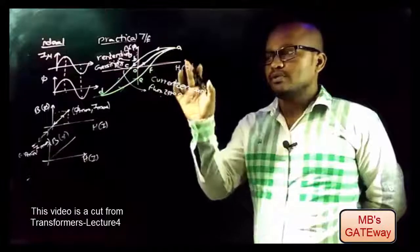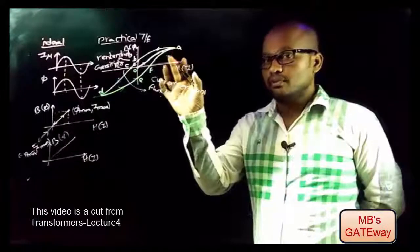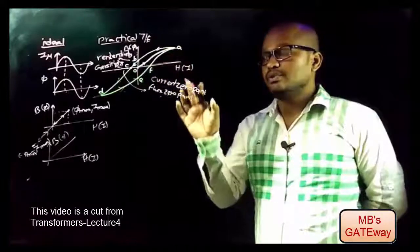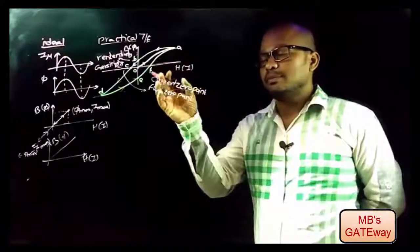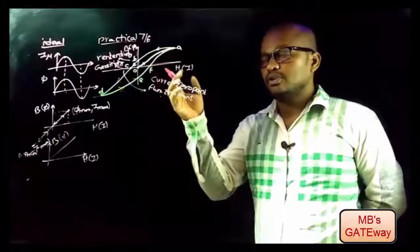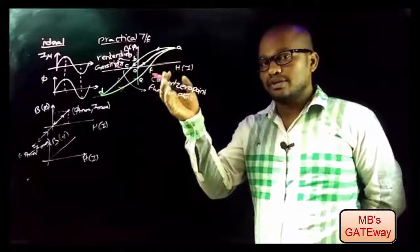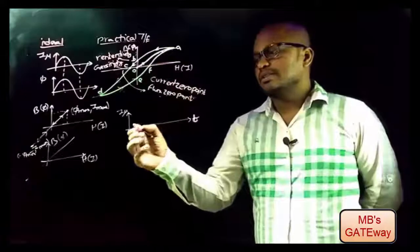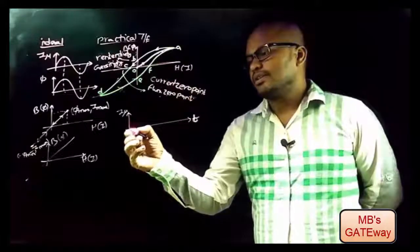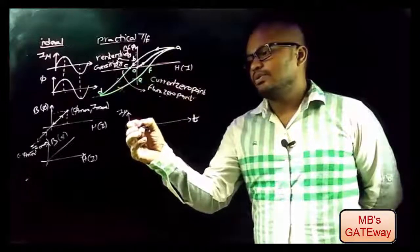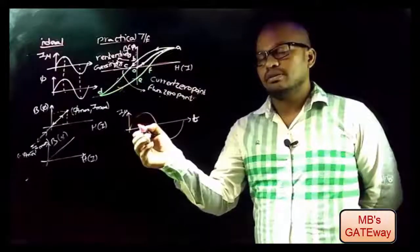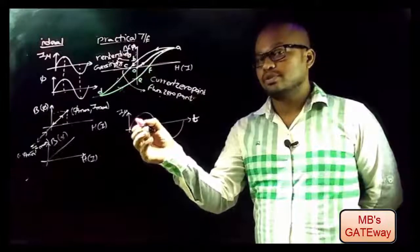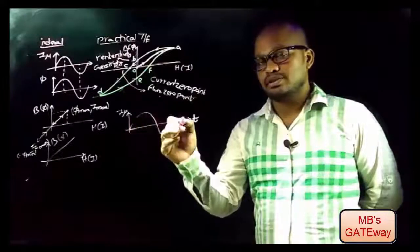Our focus here is not on the discussion of BH characteristics. It is to decide the type of input that must be applied to a transformer to get a sinusoidal output. Let's consider the sinusoidal input to the transformer — that is, the input is assumed to be sinusoidal.